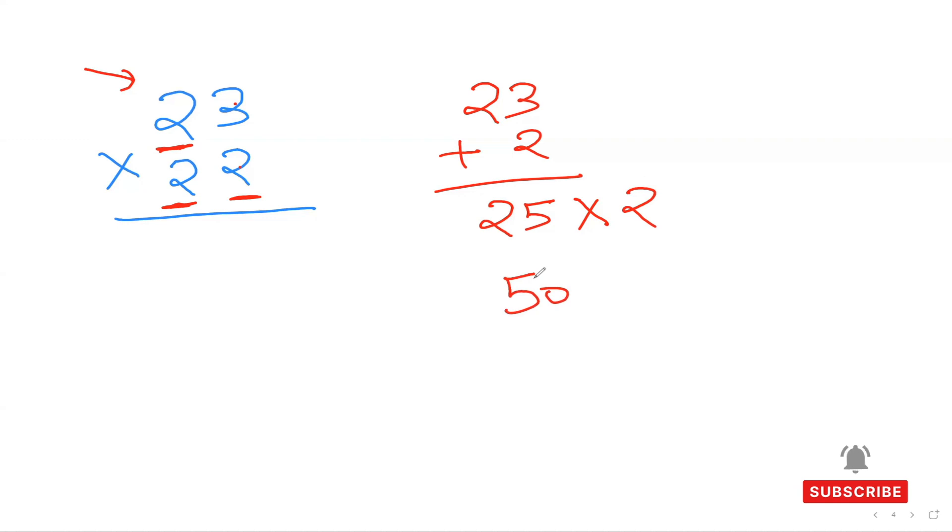Once I get that answer, 50, I've got to add one more zero into that. It will become 500. And then simply plus the multiplication of the last digit. So that is 3 and 2. Three times 2 is 6. So you're going to just add up 6. So 506 is the answer.